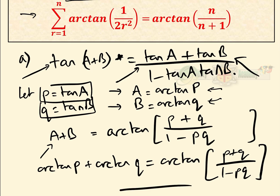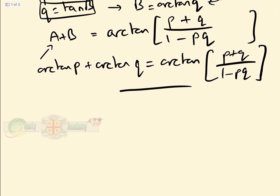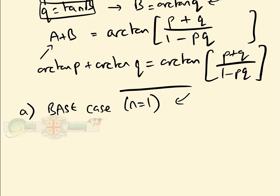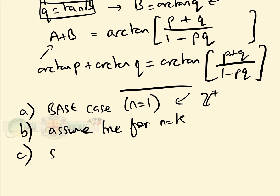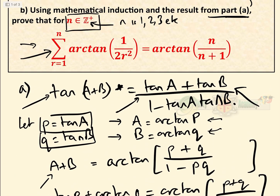That's the easier part of the question. Now we're going on to the more difficult part using mathematical induction. We use four steps: A — prove it correct for the base case n equals 1; B — assume true for n equals k; C — show it's true for n equals k plus 1; and D — write a conclusion to get the extra mark.